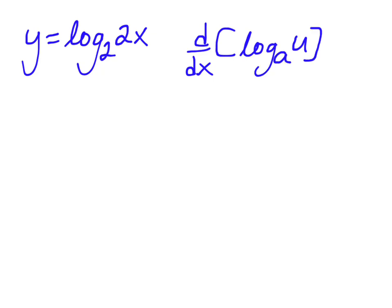That u in our case is 2x. So, the derivative of this guy is 1 over u ln of a times u prime.